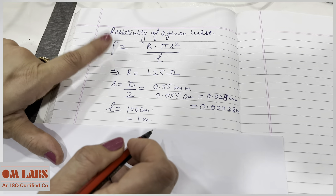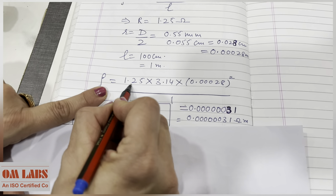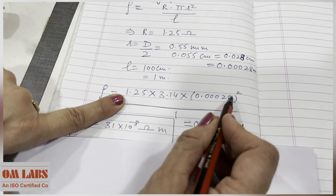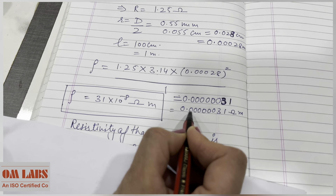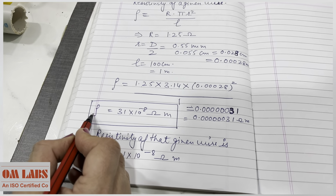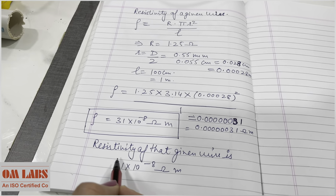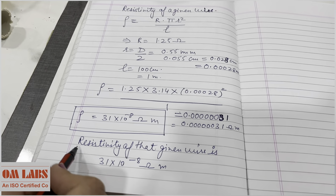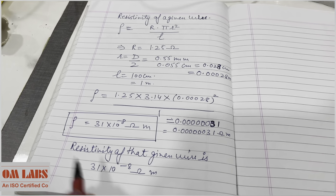Putting the values into the formula: ρ = 1.25 × π × (0.00028)² / 1. The calculated value is 0.00000031 ohm-meter, which in simplest form is 31 × 10⁻⁸ ohm-meter. So the resistivity of the given wire is 31 × 10⁻⁸ ohm-meter. This confirms that resistivity depends only on the chemical composition of the material and the temperature of the conductor — not on voltage or current.